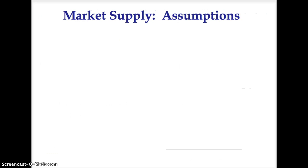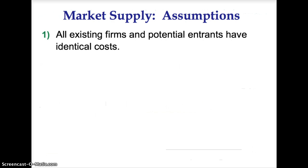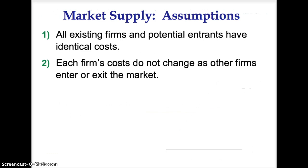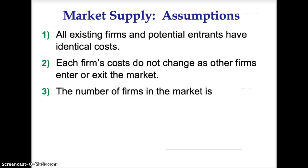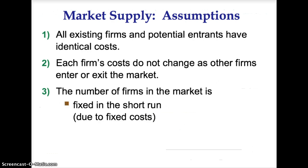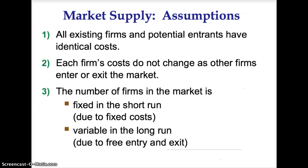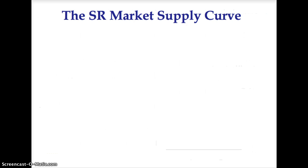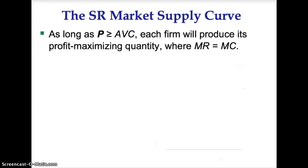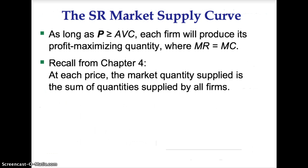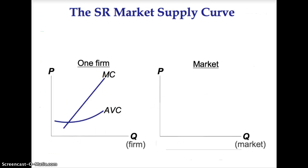There are a few assumptions regarding market supply. First, all existing firms and potential entrants have identical costs. Second, each firm's costs do not change as other firms enter or exit the market. Third, the number of firms in the market is fixed in the short run due to fixed costs, and variable in the long run due to free entry and exit. For the short-run market supply curve, as long as price is greater than or equal to average variable cost, each firm will produce a profit-maximizing quantity where marginal revenue equals marginal cost. At each price, the market quantity supplied is the sum of the quantity supplied by all firms.